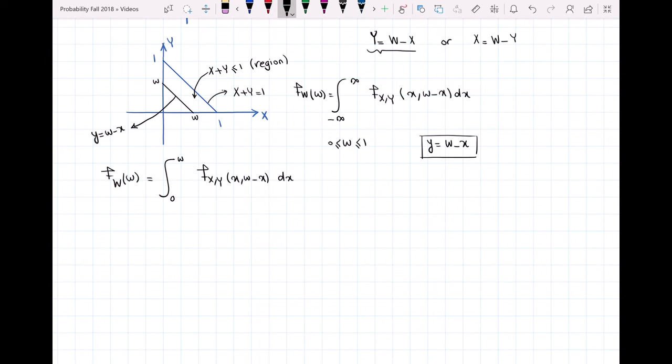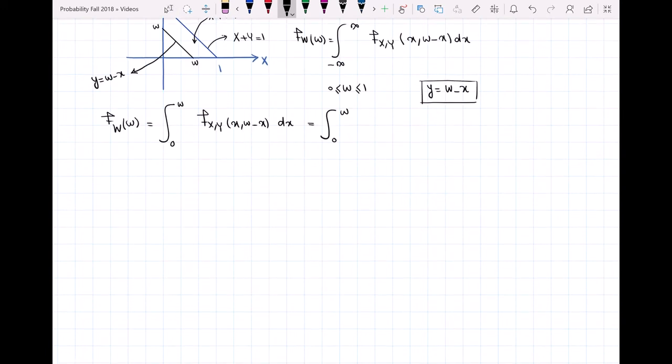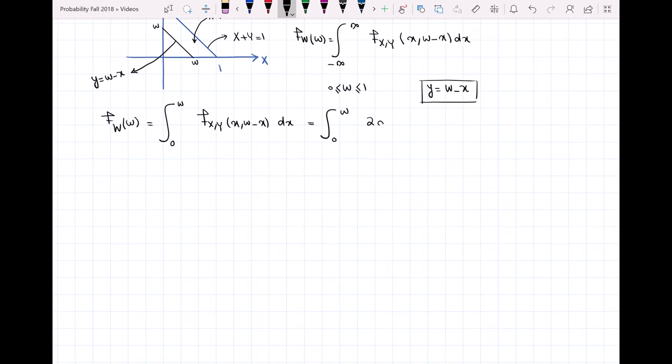Now I can say this is equal to, from 0 to 1, from 0 to W, the PDF. What is the PDF of X and Y? It is equal to 2. So from 0 to W of 2 dX gives me 2X from 0 to W, which equals 2W.